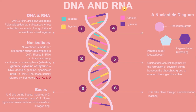A nucleotide is made up of a 5-carbon sugar — deoxyribose in DNA, ribose in RNA — and also a phosphate group. Next, a nitrogen-containing base: adenine, guanine, cytosine, or thymine.